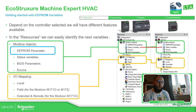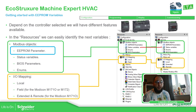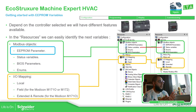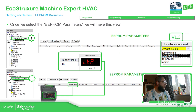To avoid that — for example, if we want to save a variable that holds configuration for our machine — we just need to use the EEPROM parameters. The access is the same as we saw before for status variables, and the EEPROM section is found under Modbus options.